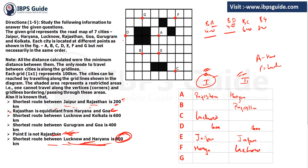Next clue: distance between Gurugram and Goa is 400 kilometers. In Case 1, D is Goa. Points 400 kilometers from D are G or B, giving two possibilities for Gurugram. In Case 2, D is Goa but B can't be Gurugram because B is already Rajasthan. So in Case 2, Gurugram must be G. The remaining cities left to place are Lucknow, Kolkata, and Gurugram.